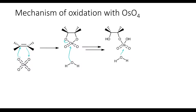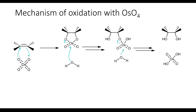Then to get the second alcohol, another water molecule will attack the osmium, resulting in the cleavage of this bond and the formation of the second alcohol. Notice that the intermediate in this reaction is a constrained five-membered ring, and the oxygens that end up becoming the alcohols are part of that five-membered ring. The resultant diol is a product of syn addition.